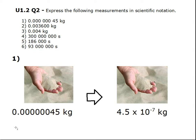0.000000045 kg. So we pull out the significant figures, which is 45, and we reduce to something between 1 and 10, so 4.5. And then we count the number of decimal places that we moved: 1, 2, 3, 4, 5, 6, 7. So the final answer is 4.5 times 10 to a negative 7 kg.